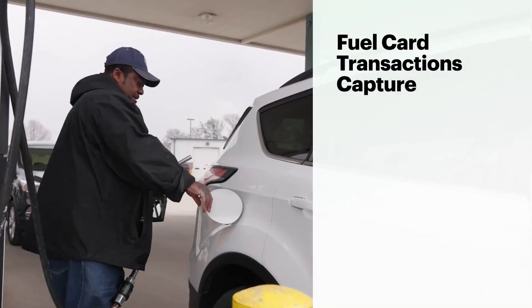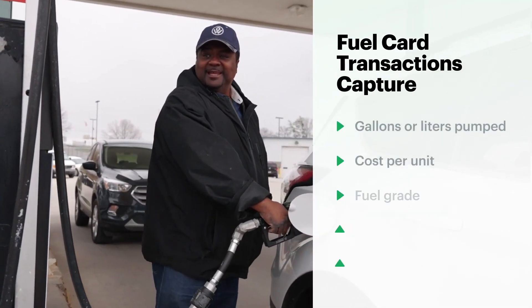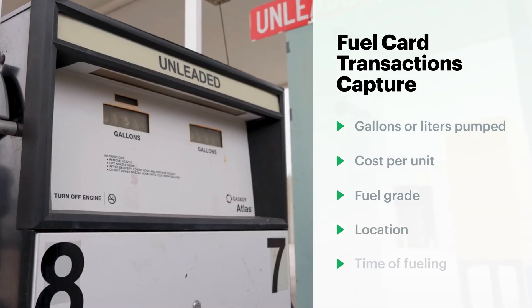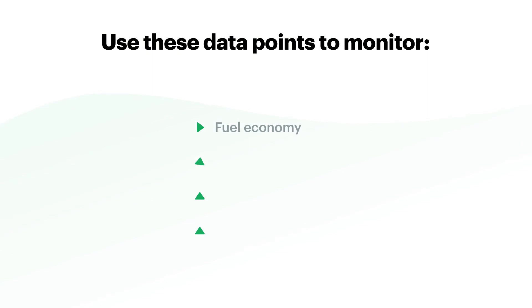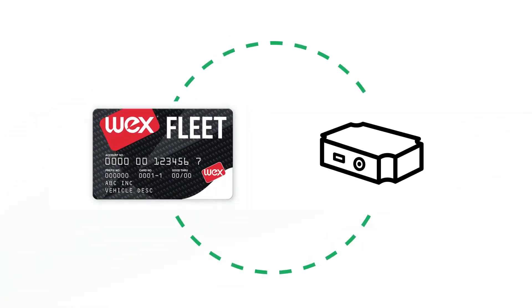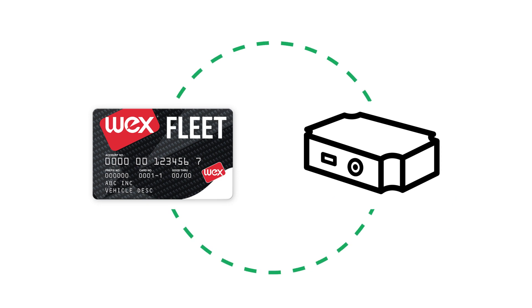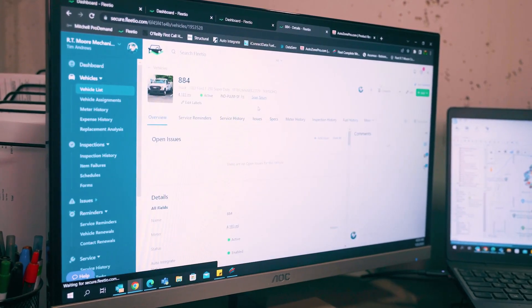While a transaction itself captures the number of gallons or liters pumped, cost per unit, fuel grade, location, and the time of fueling, you can use these data points to monitor fuel economy, fuel cost, purchase locations, and potential fuel theft. Integrating your fuel cards into a telematics or fleet management system allows for automated data collection and consolidates the data with other information you may be tracking to provide a more complete picture of your fleet's fuel use.